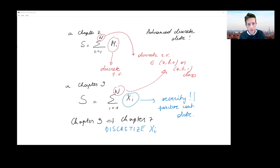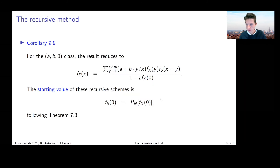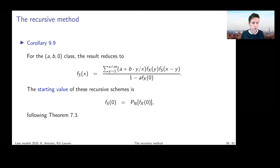So how do you go from Chapter 9 back to Chapter 7? We discretize, and then the Panjer recursion is directly available. After the break, we'll think about how to do this discretization in a clever way — what are a couple of methods to accomplish that.